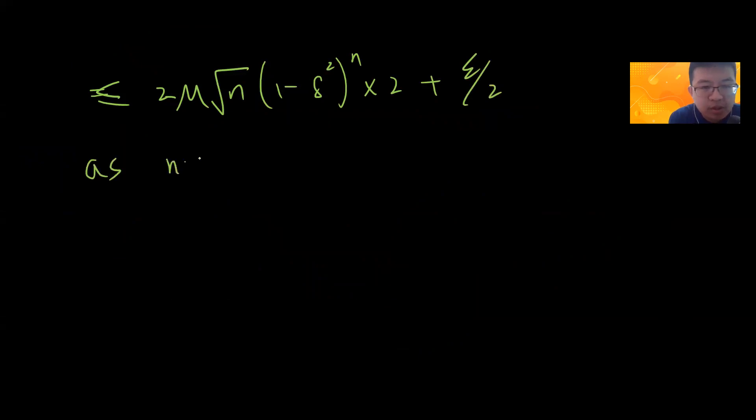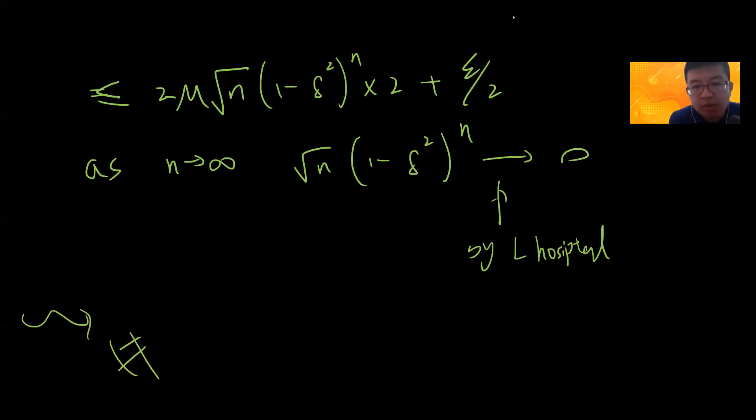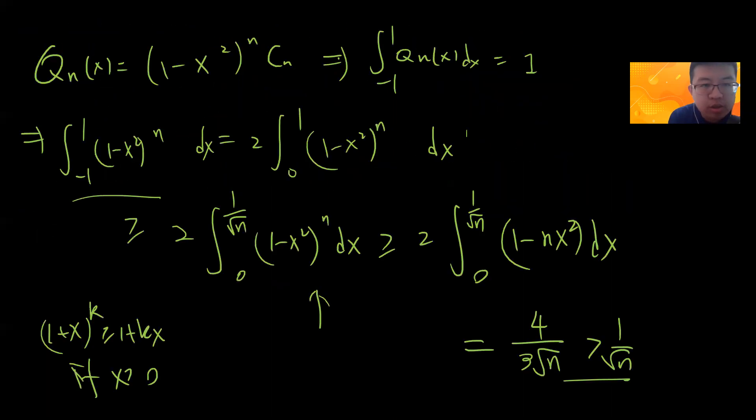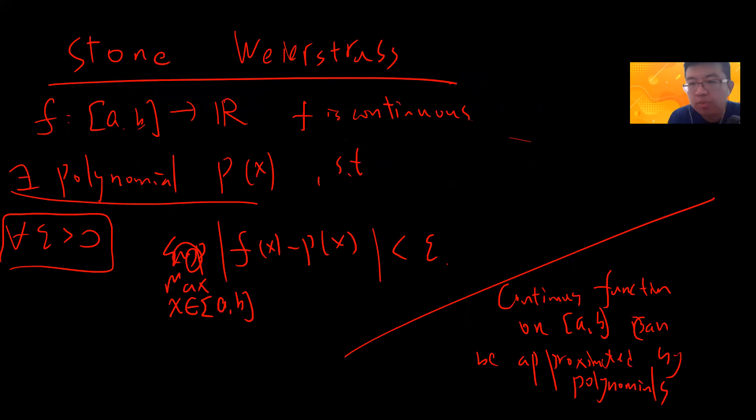As n goes to infinity, I know that √n(1-δ²)^n can go to 0. We can prove this by L'Hôpital's rule. So I know this guy becomes bounded by epsilon. This is the key theory and the proof of Stone-Weierstrass.